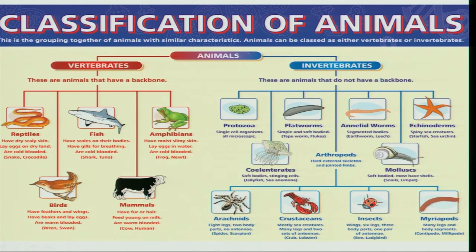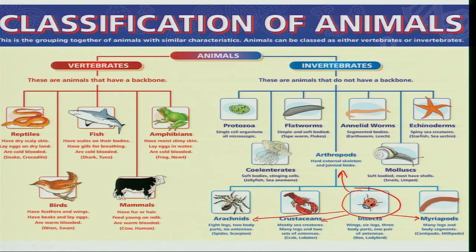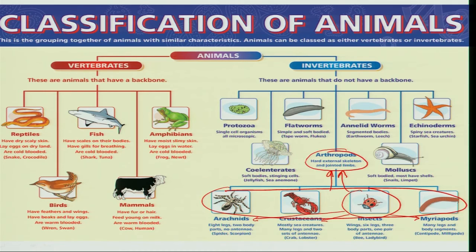Coming back to the classification of insects in the animal kingdom — insects, which come under Arthropoda, are closely related to arachnids, crustaceans, and myriapods. Arachnids commonly include scorpions, mites, spiders, and ticks. Crustaceans include crayfish, crabs, and lobsters. Myriapods mainly include centipedes and millipedes. All four sister groups share certain common characters that are characteristic features of arthropods.